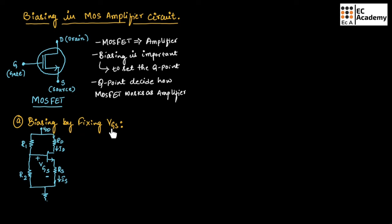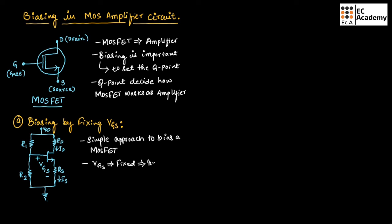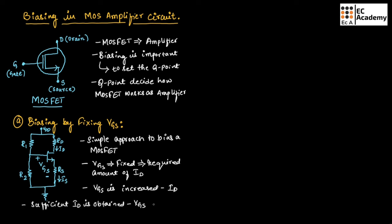Let us understand biasing by fixing VGS. This is one of the simple approaches to bias a MOSFET. In this type of biasing, VGS is fixed so that we can get the required amount of drain current. This can be obtained by using a suitable voltage divider circuit as shown in the figure.